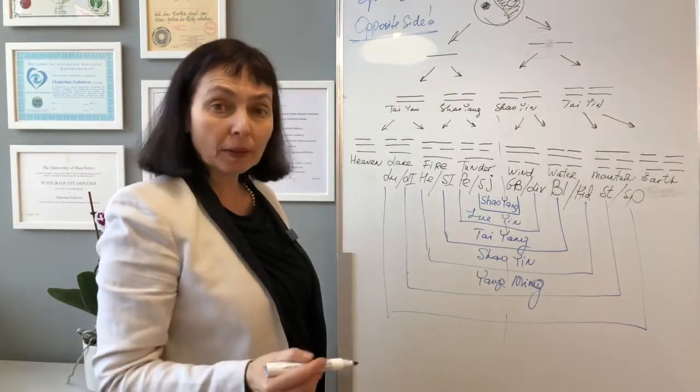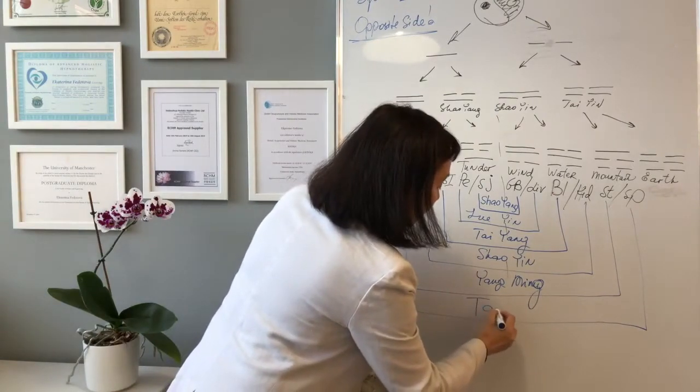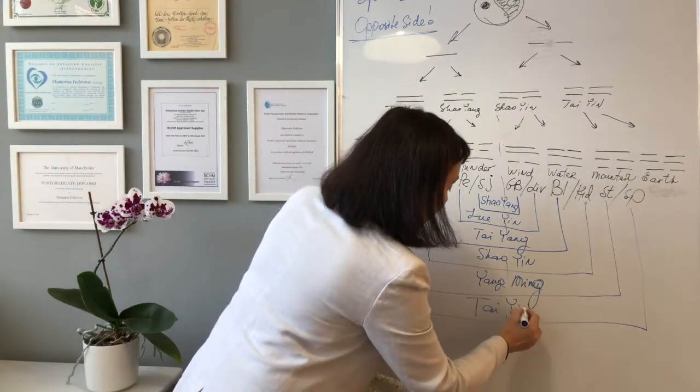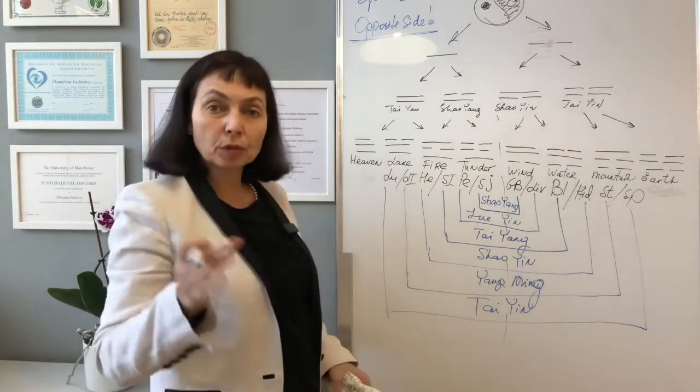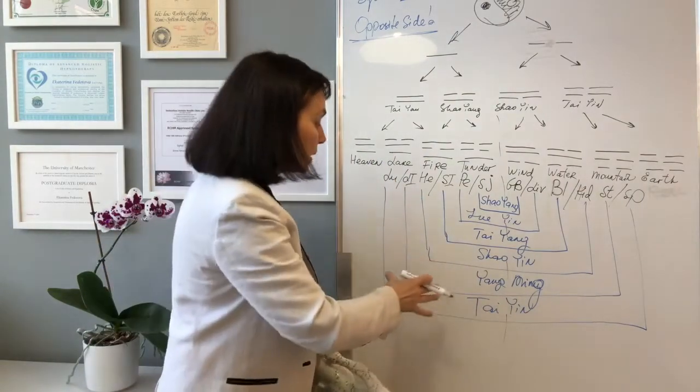Let's go further. Lung and spleen. This is tai yin. The hand tai yin will balance foot tai yin and foot tai yin will balance hand tai yin.